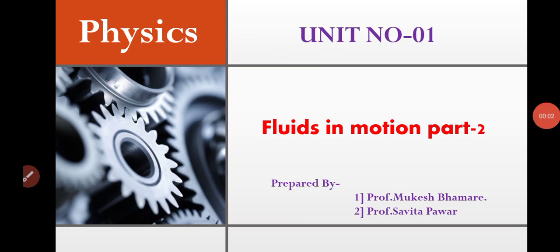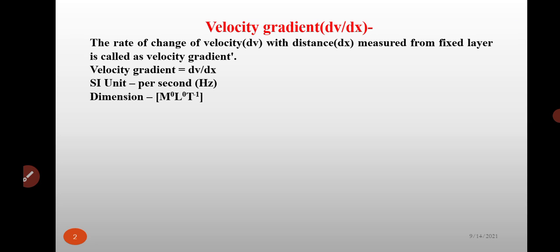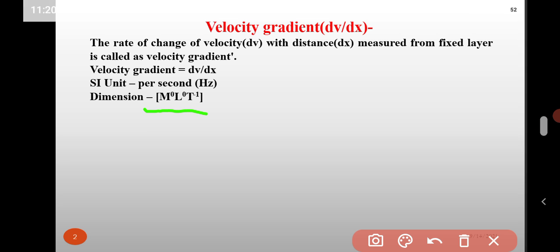Hello friends, we have to start a new topic: Fluids in Motion. First, we have to see Velocity Gradient, and it is denoted by dV by dX. The rate of change of velocity with distance measured from the fixed layer is called as Velocity Gradient.